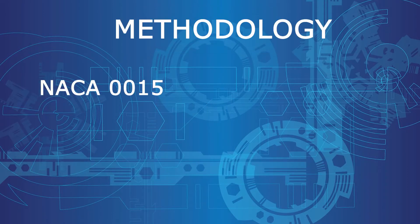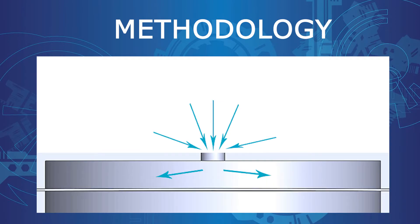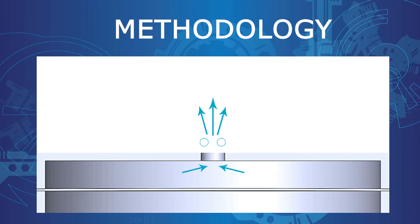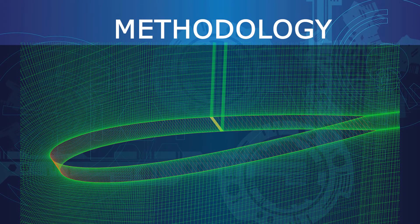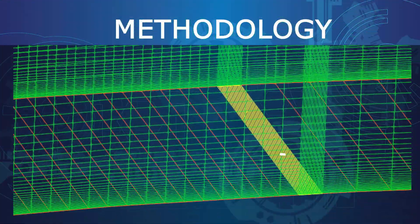A two-dimensional NACA 0015 airfoil was used for the simulation. The mesh was generated using the block mesh utility in OpenFOAM software, which allowed the mesh size to be very computable and highly customizable. Actual modeling of the actuators was not done due to computational limits, so the mathematical modeling of the velocity condition at the patch of the synthetic jet injection was done instead.